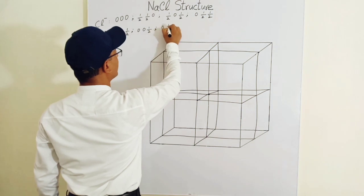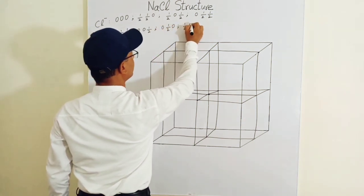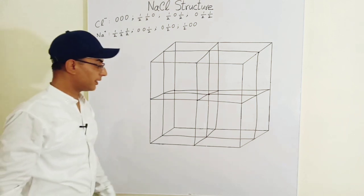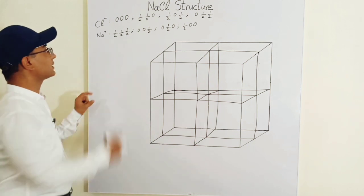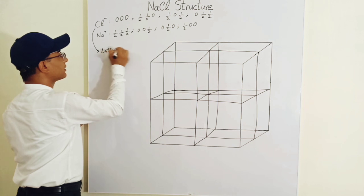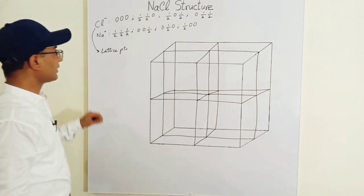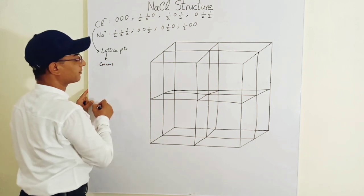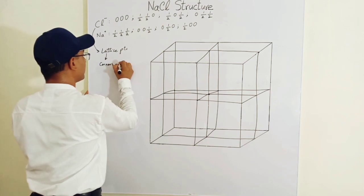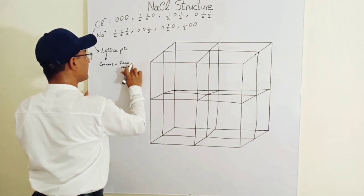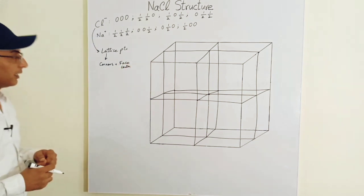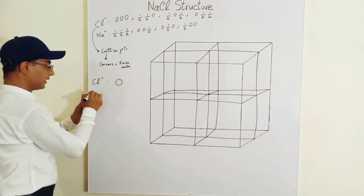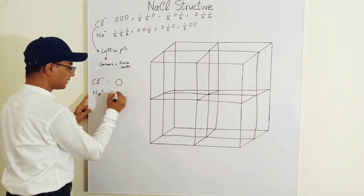Similarly, you'll get the positions of the sodium ions. Now, before we go and locate the positions of the chlorine ions, one should remember that the position of the chlorine ions is at the lattice points, and these lattice points are found at the corners and at the face center. So, the chlorine ion has a large radius — let's represent it as a red circle — and the sodium ion has a smaller radius, represented in blue.